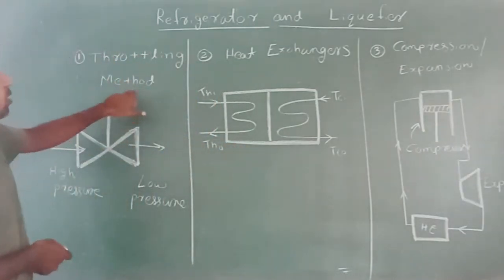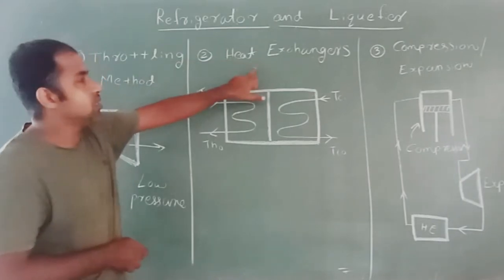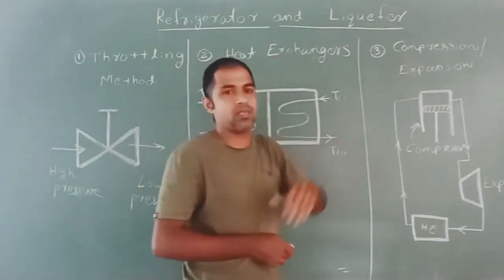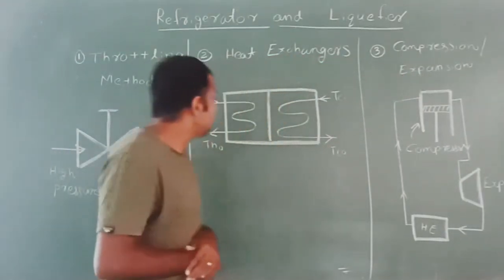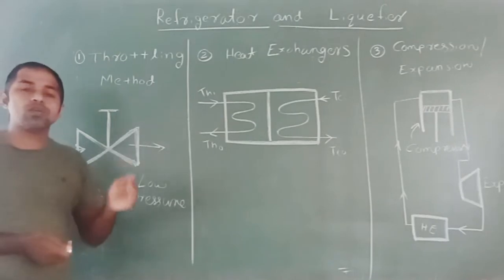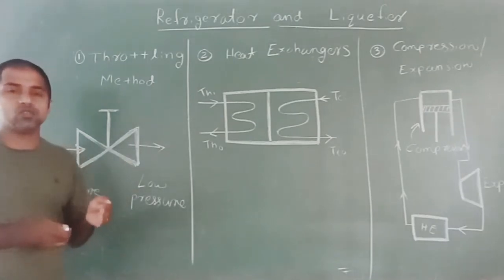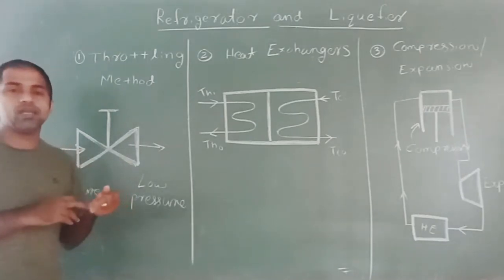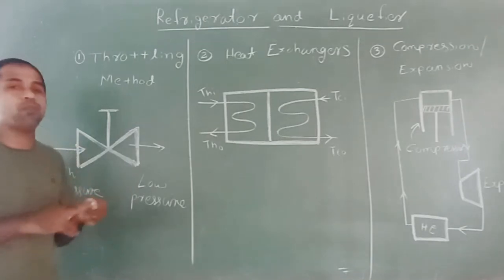The first method is the throttling method. In case of a throttling method, in order to produce a low temperature, we are using a device that is known as a throttling device. It may be a throttle valve or it may be a capillary tube.